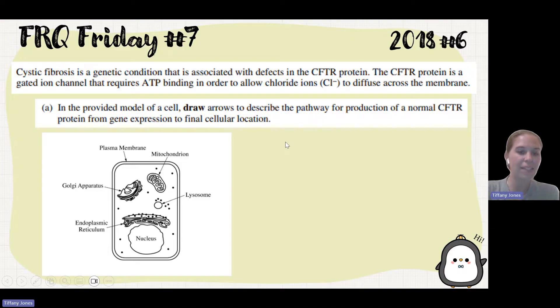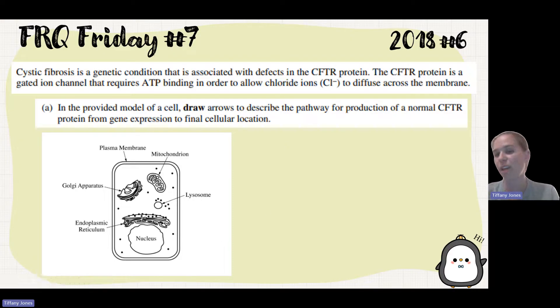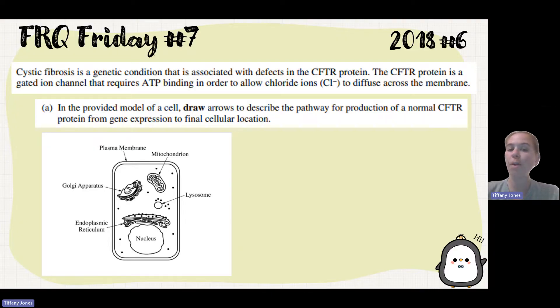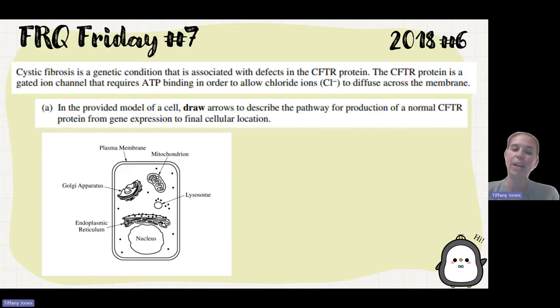They then give us this model of a cell and they say: draw the arrows to describe the pathway for production of a normal CFTR protein from gene expression to the final cellular location.